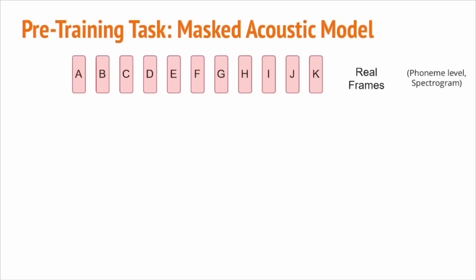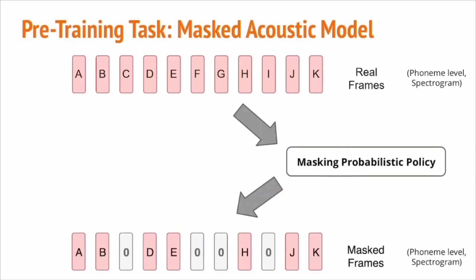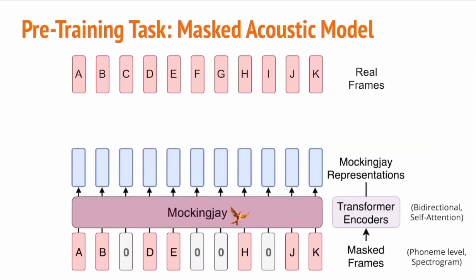Now let's go into details about the proposed pre-training task, which we used to pre-train our transformer encoders. We will illustrate the pipeline from input to output. First, we have some real frames at the input — these frames are phoneme-level spectrograms. Next, we have a masking probabilistic policy that will mask frames to zero at random. These masked frames will then be the input to our model during training. After masking, we feed them to our model using multiple layers of transformer encoders with multi-head self-attention to achieve bidirectional encoding.